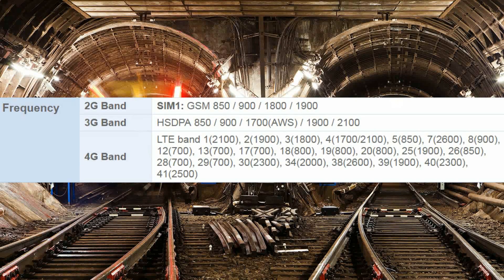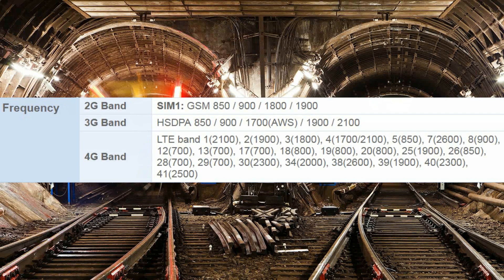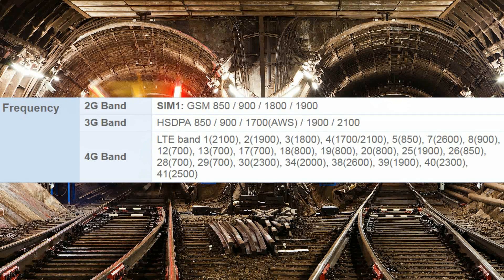Frequency: 2G bands GSM 850, 900, 1800, 1900. 3G bands: 850, 900, 1700 AWS, 1900, 2100. 4G LTE bands: 1 (2100), 2 (1900), 3 (1800), 4 (1700/2100), 5 (850), 7 (2600), 8 (900), 12 (700), 13 (700), 17, 18 (800), 19 (800), 20 (800), 25 (1900), 26 (850), 28 (700), 29 (700), 32 (1500), 34 (2000), 38, 39 (1900), 41 (2500), 42 (3500).